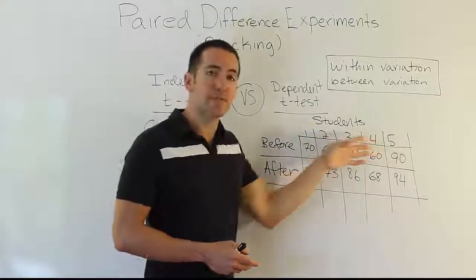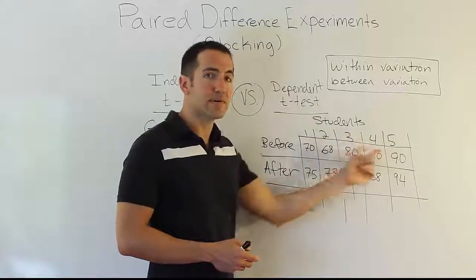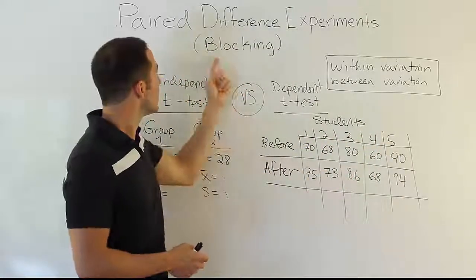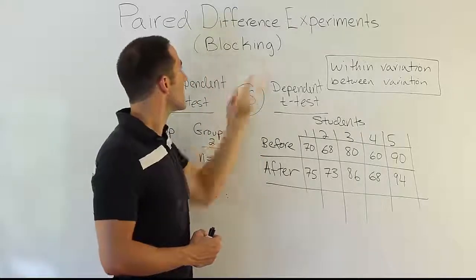So that's the main thing. What happens here is we want to ignore those differences then. The differences that you see within these students or within these subjects. And the way we're going to ignore them is we're going to block out those differences. We're going to find a way to ignore those differences. And that's where the phrase blocking comes in.